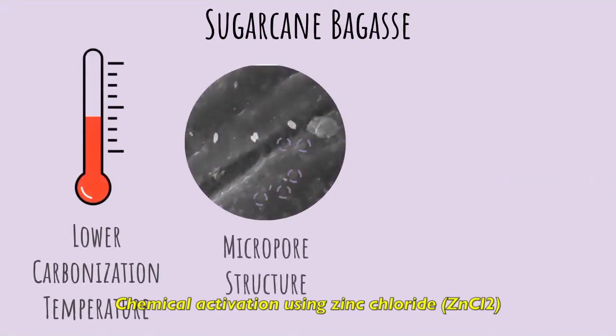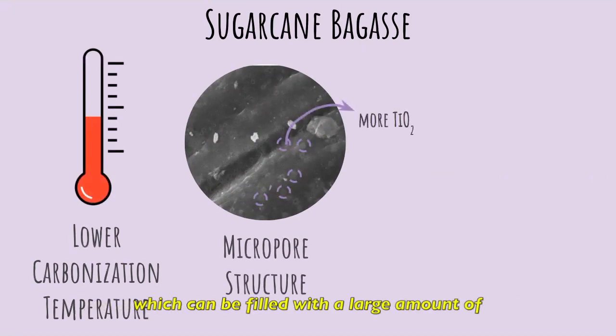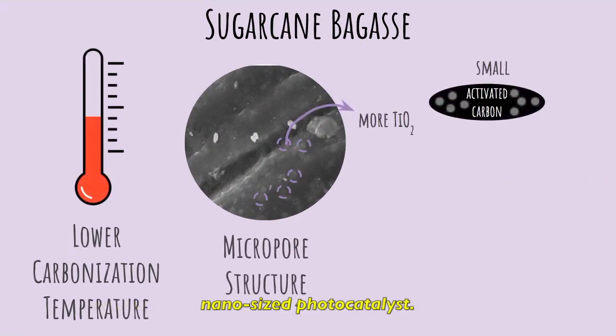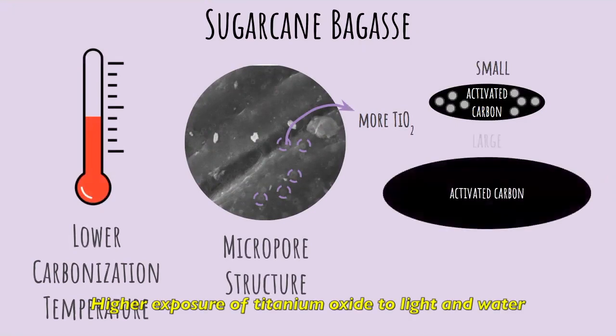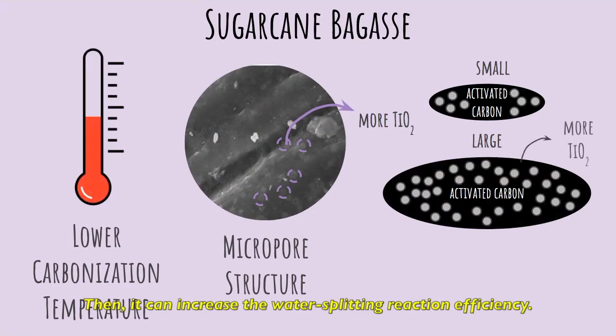Chemical activation using zinc chloride results in a large surface area and micropore structure which can be filled with a large amount of nano-sized photocatalyst. Higher titanium oxide exposure to light and water indicates more reaction can be generated. Then, it can increase the water-splitting reaction efficiency.